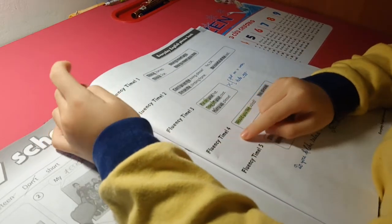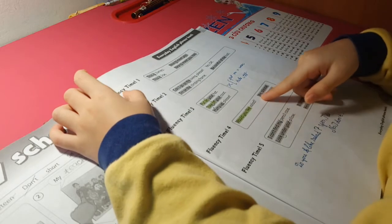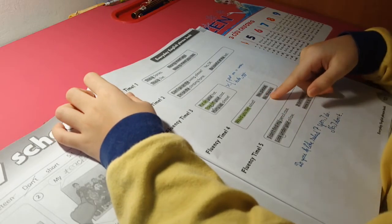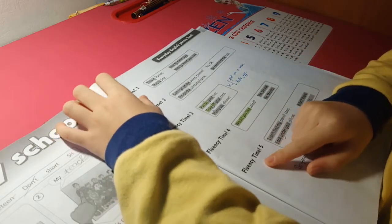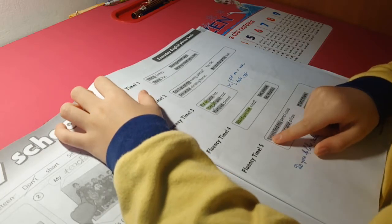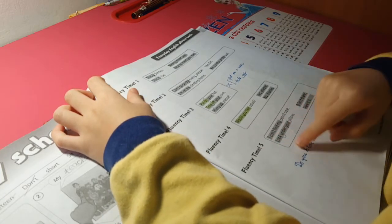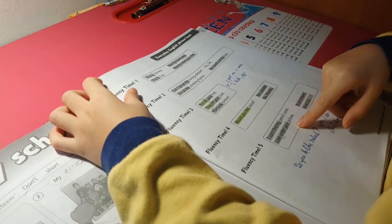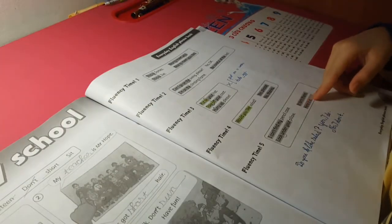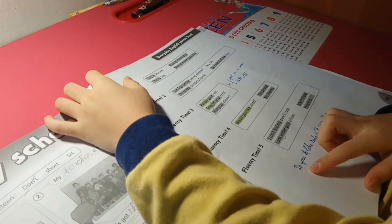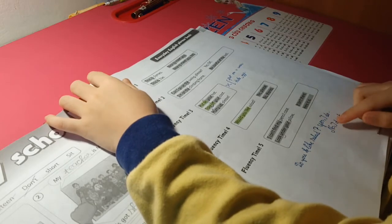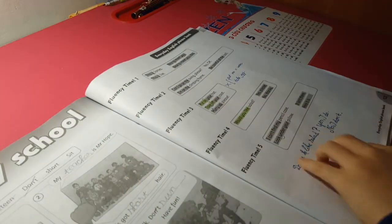Fluency time four. Would you like salad? Yes, please. No, thanks. Fluency time five. I can't find my pencil case. Look under your pillow. It isn't there. Here it is. Do you like salad? Yes, I do. No, I don't.